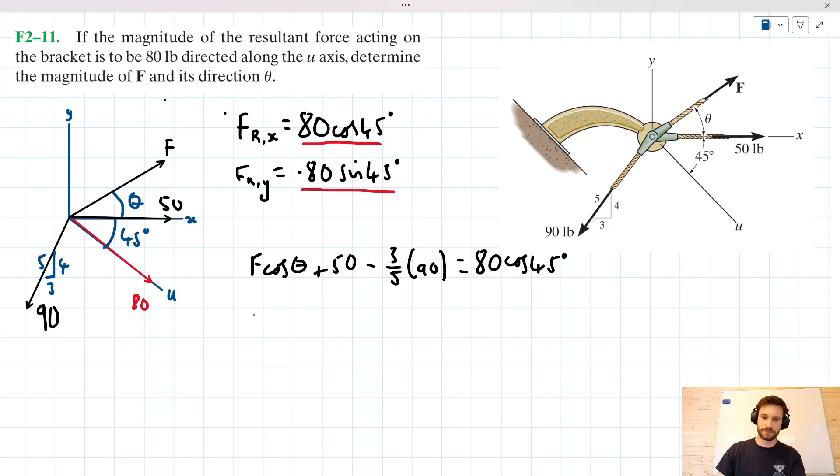We can do the same vertically. So we can say F sin of theta. The 50-pound force doesn't have a vertical component, so we can ignore it. Minus 4 fifths of 90 is all equal to minus 80 sin 45. Now, is this problem solvable? Well, evidently, yes, because we have two unknowns. We have F and theta that we don't know. And we have two independent equations. Let's call this equation one and let's call this equation two.